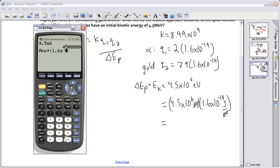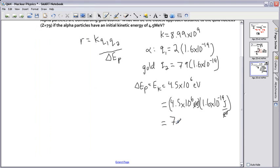All that times 1.6 times 10 to the minus 19. So that gives me 7.2 times 10 to the minus 13 joules. And I need that number.